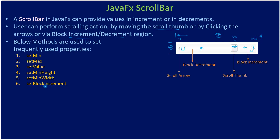You can also call setBlockIncrement — for example, if you pass 5, whenever you click the block decrement region, the value will be reduced in steps of 5, and clicking the block increment region increments in steps of 5 for each click. So if the current position is 80, clicking the right block region goes to 85, and clicking the left block region gives 75. If you set 10, the block increment will be in steps of 10.